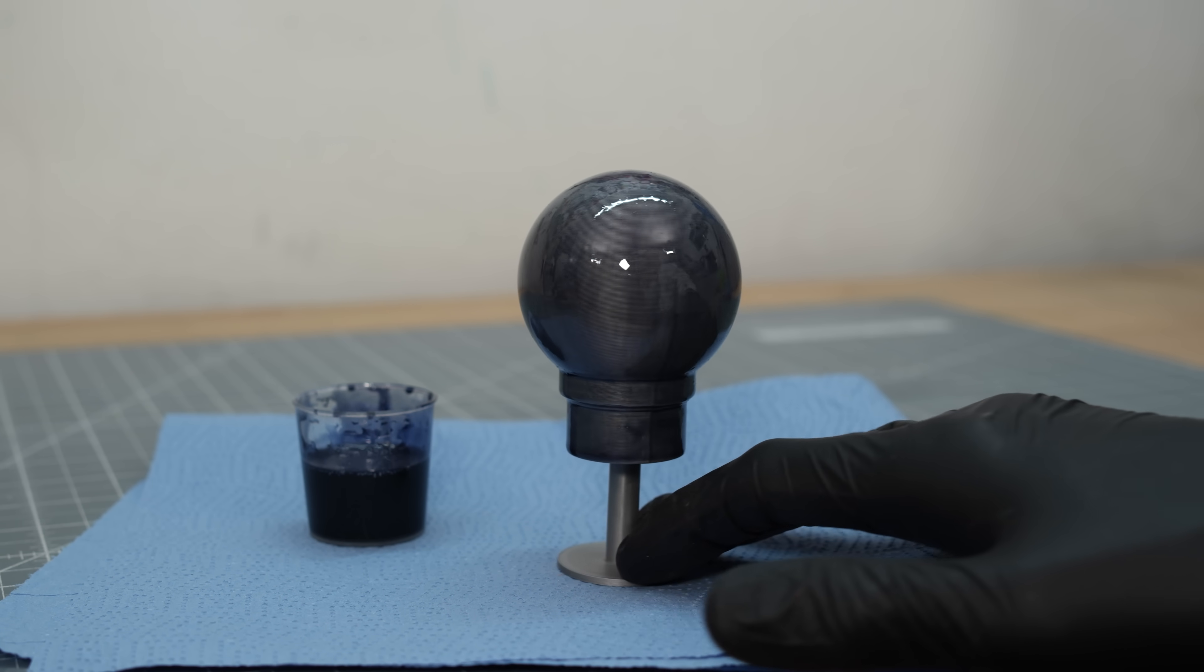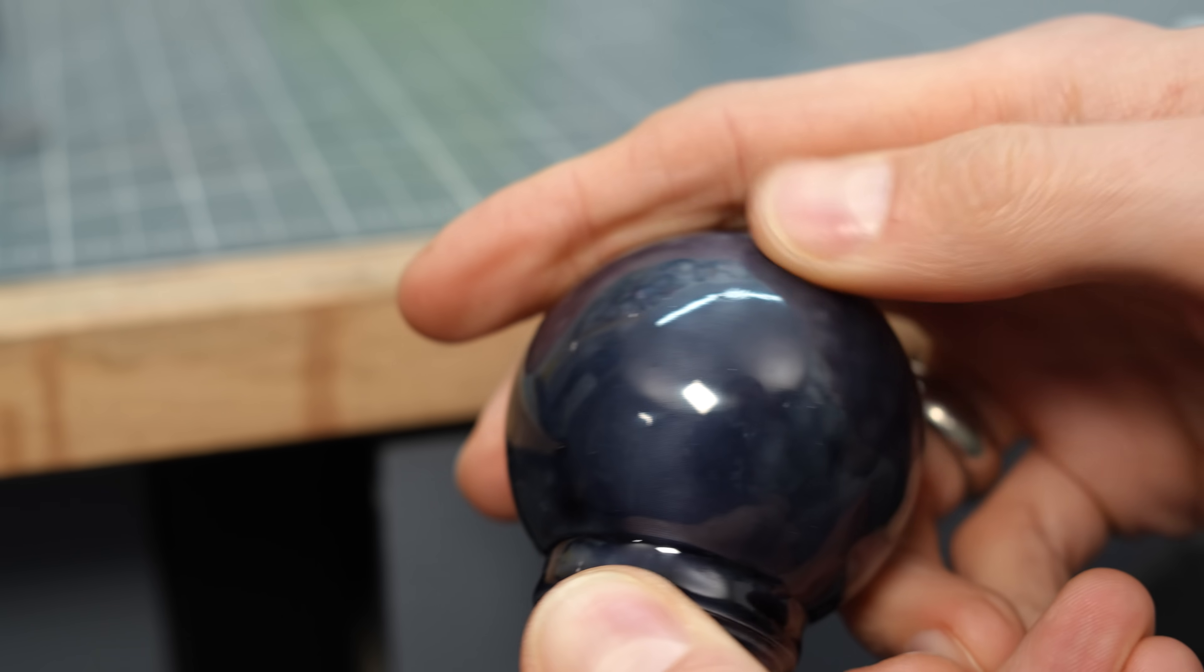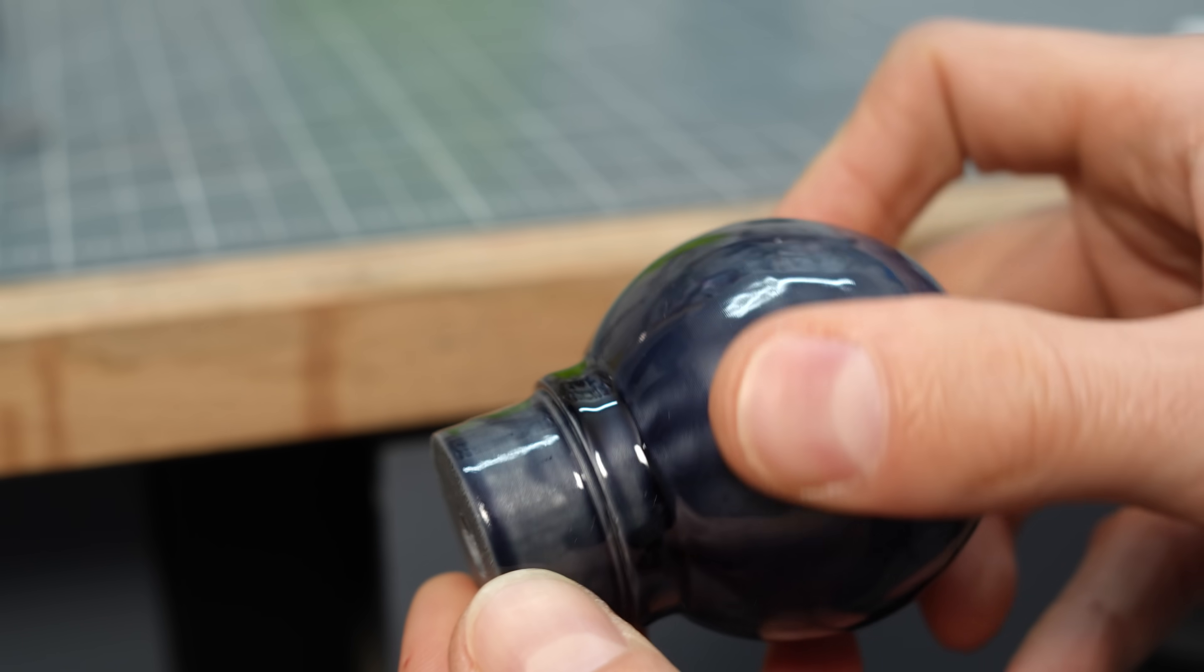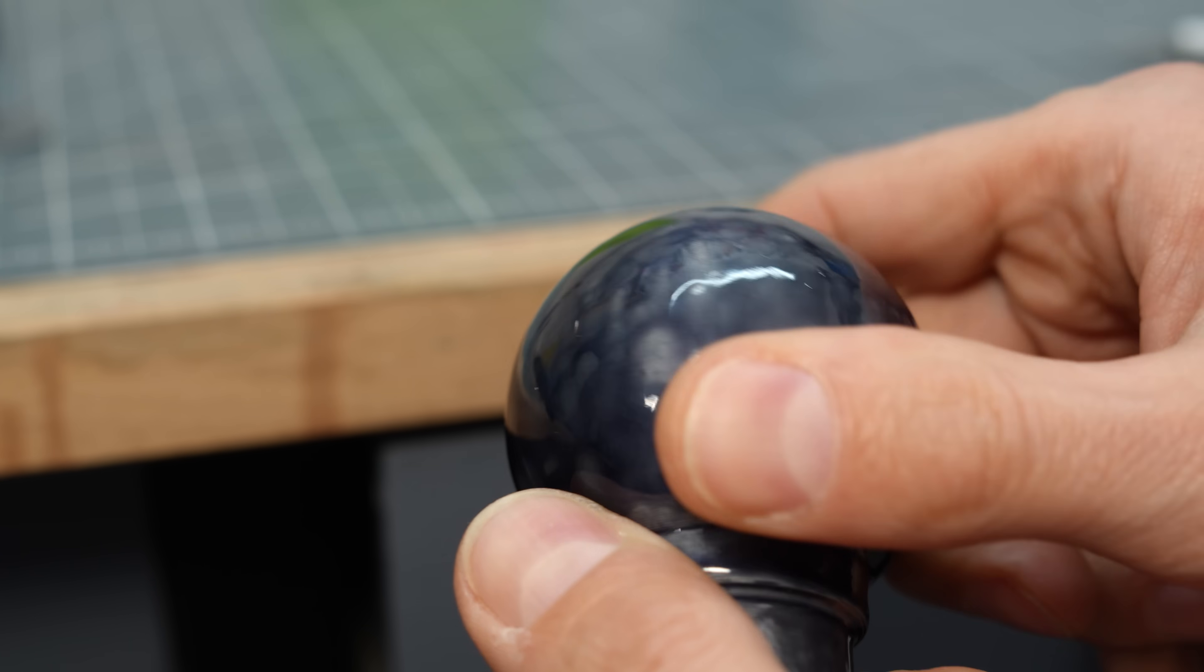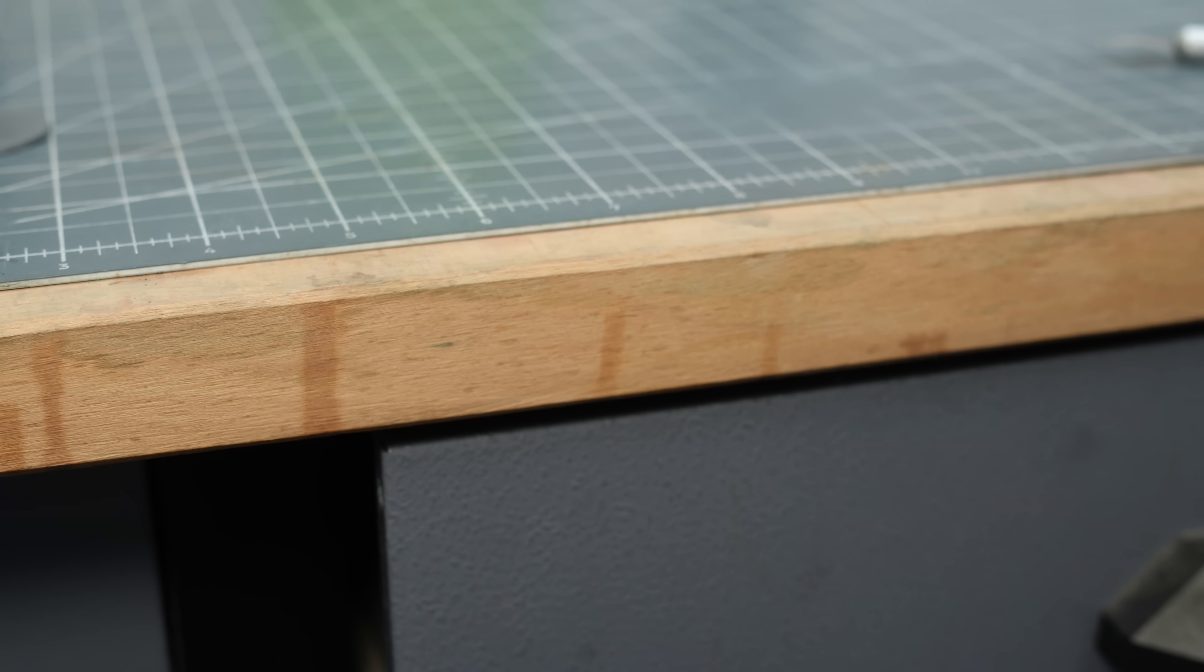However, once it cures, it becomes very hard. The layer lines are gone and the surface is smooth, but uneven. That makes it tricky to achieve a mirror effect. I probably should have used resin specifically designed for 3D prints instead.